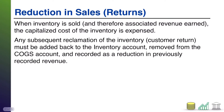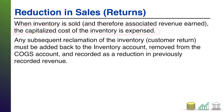When companies sell goods to customers, the capitalized cost of those goods are expensed — that's cost of goods sold. The value of the inventory is lowered on your balance sheet. So you've lost the inventory, you expense it, inventory goes down. That's what happens during a typical sale of product to a customer.